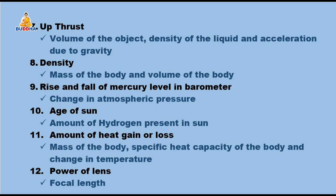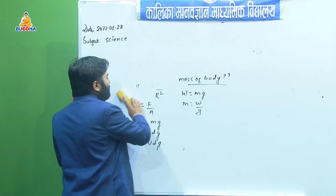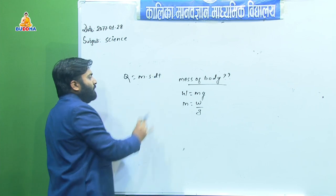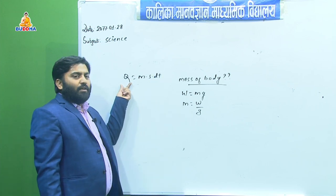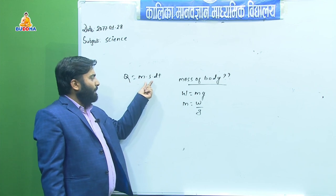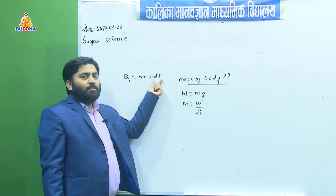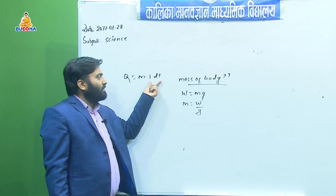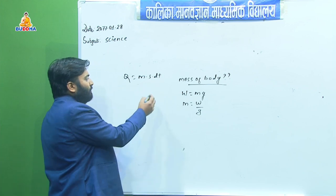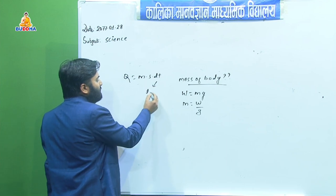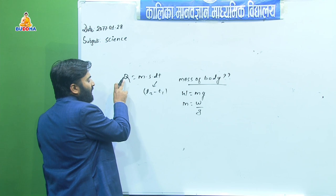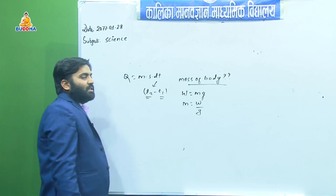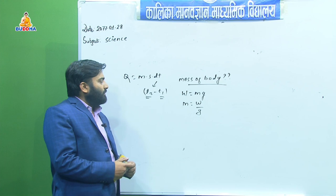If the exam asks for four factors on which the amount of heat depends, we can expand DT = T2 − T1, so the four factors become: mass of the body, specific heat capacity of the body, final temperature, and initial temperature.